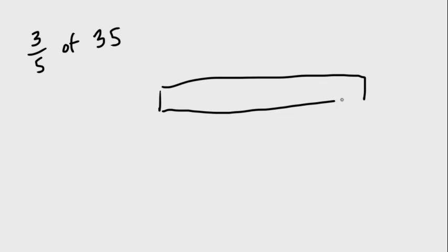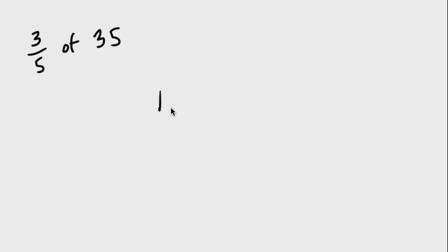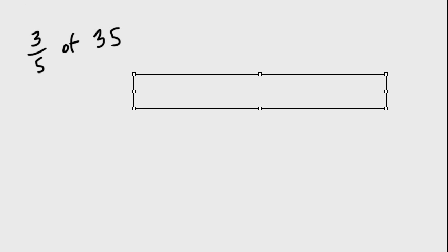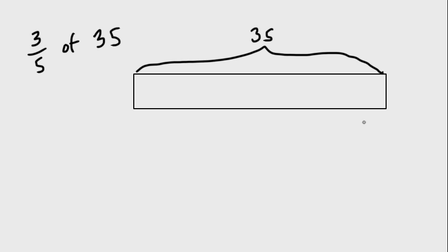So I'm going to teach you something called a tape diagram. This might not be teaching you anything new because we should know what a tape diagram is, but we're going to use it a little differently to help us with fractions. So here's our tape diagram, and we're going to label this entire thing as 35 because that is our whole. I know it's three-fifths, so I'm dealing with fifths, and I'm going to split my tape diagram into fifths — as equal as possible.